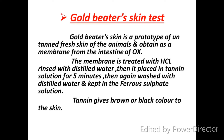The gold beater's skin test is the main color test for tannins. In this test, a prototype of untanned fresh skin of the animal is obtained as a membrane from the intestine. The membrane is treated with HCl, rinsed with distilled water, then placed in tannin solution for five minutes, again washed with distilled water, and kept in ferrous sulfate solution. The tannins give a brown or black color to the skin.